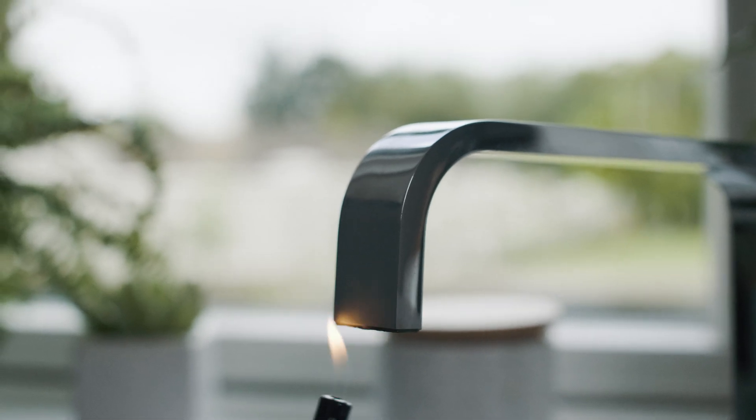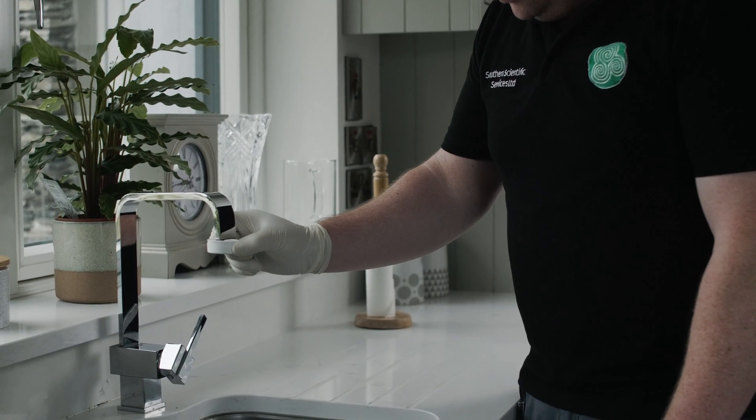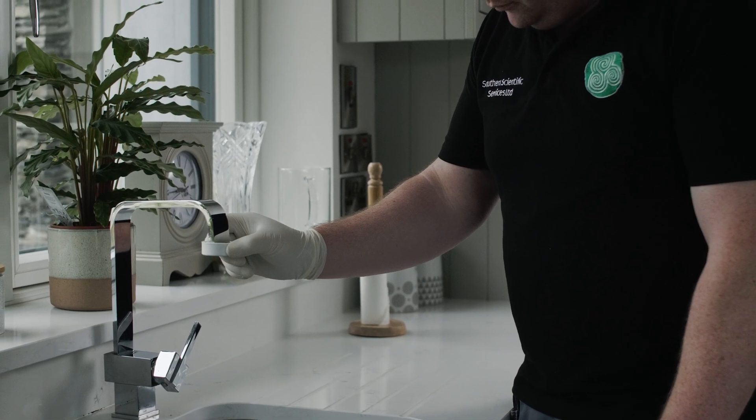Step 2. Turn off the tap and disinfect it by flaming or if it is fitted with a plastic anti-splash device disinfecting it using a 2% available chlorine solution such as Milton fluid.